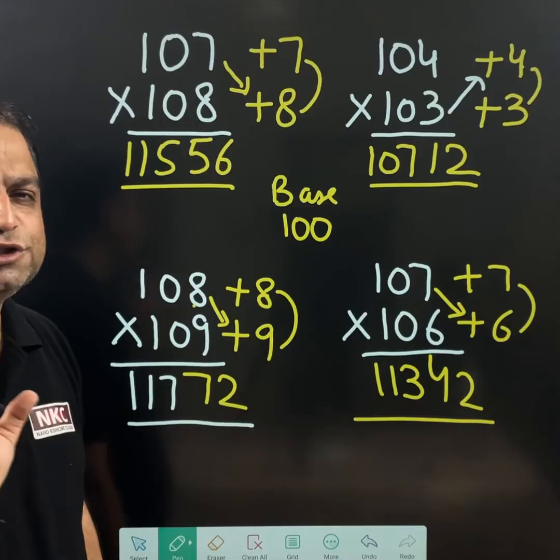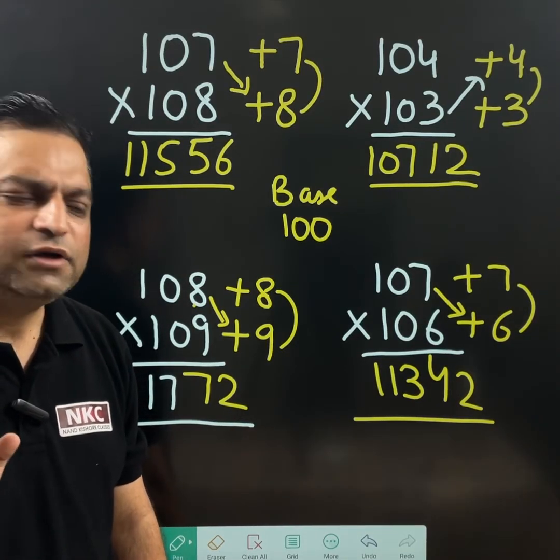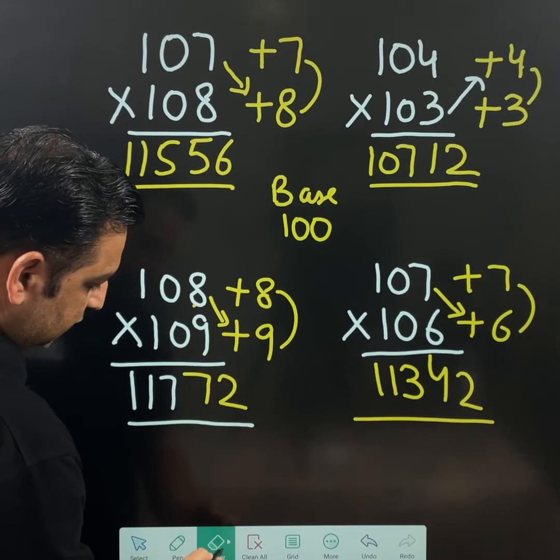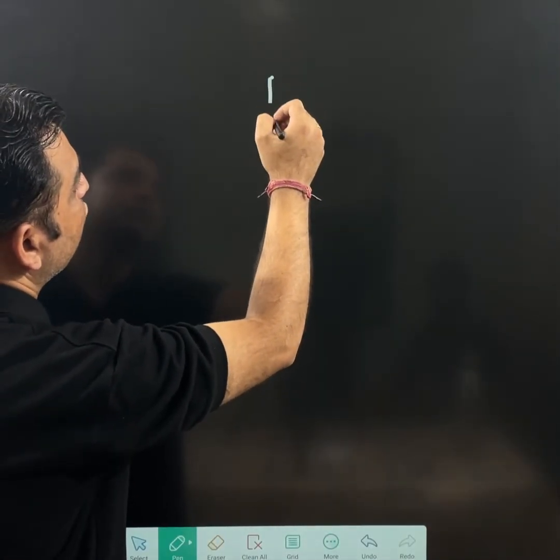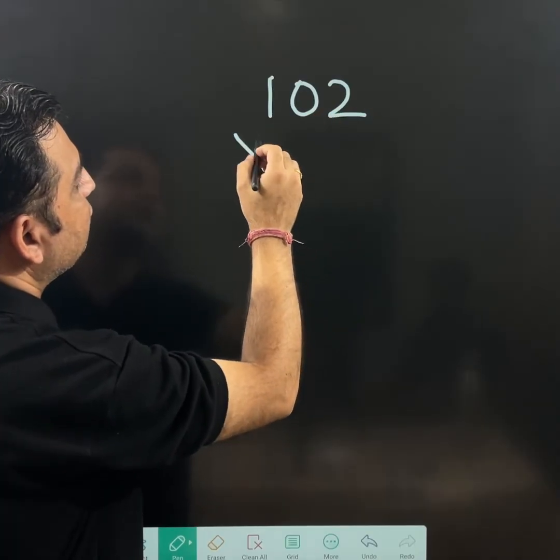Now, one more question I am going to do. We need to be very careful. Let me show you. Let us pose. Our question is 102 multiply 103.